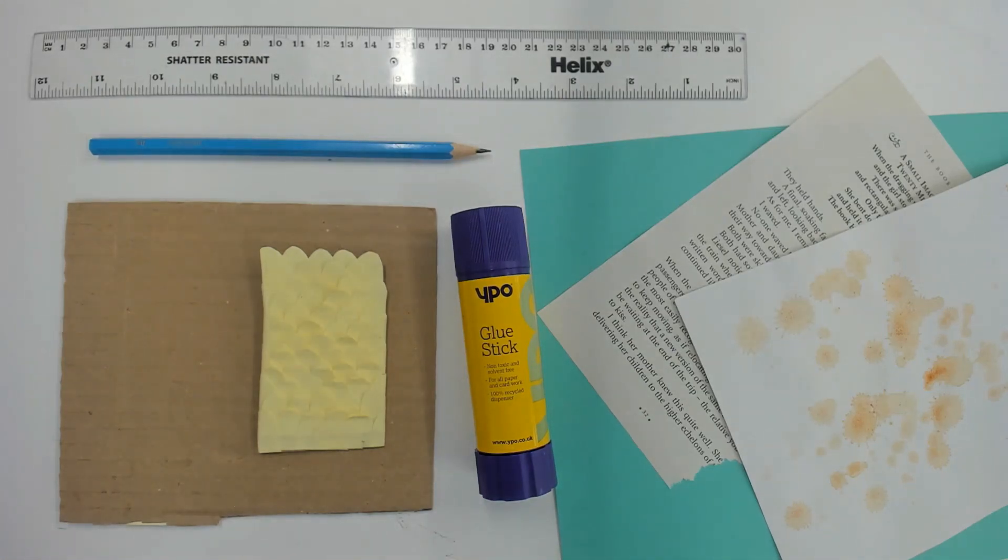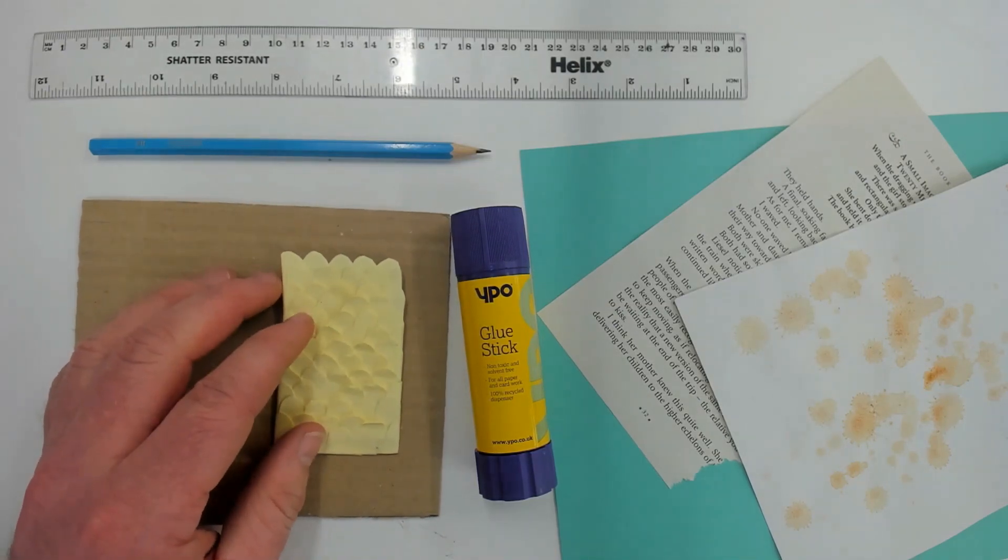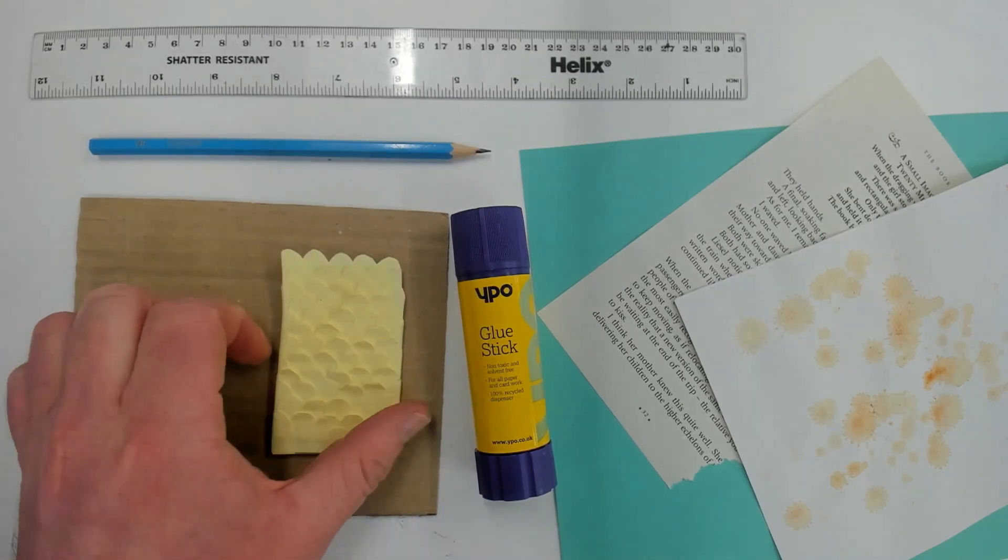Hello Key Stage 4 and welcome to your seventh 3D design lesson. In today's lesson we're going to move on from our mark making on cardboard and take it a bit further by making some different marks using paper. In particular, we're going to be focusing on this fish scale pattern I've made here.